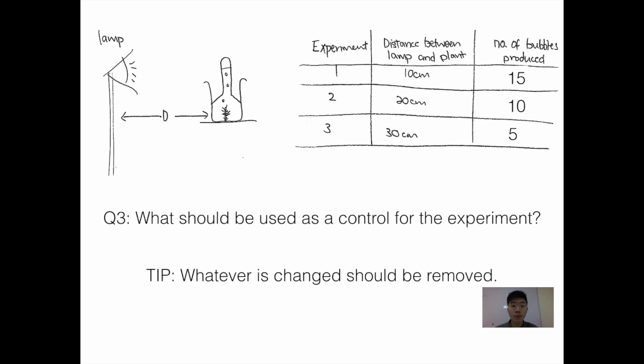Let's look at the third question now: What should be used as a control for the experiment? The tip here is that whatever is being changed, which in this case is the intensity of the light, should be removed. So basically, we'll be just using the flask with the inverted test tube and the hydrilla plant.